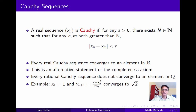You can easily construct Cauchy sequences of rational numbers that do not converge to an element in the rational numbers — an example is shown on the slide. Every element in such a sequence is rational, but its limit is not rational. This is just another way of saying that the rational numbers do not satisfy the completeness axiom.